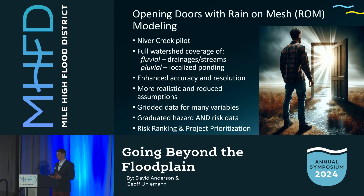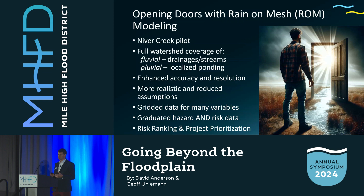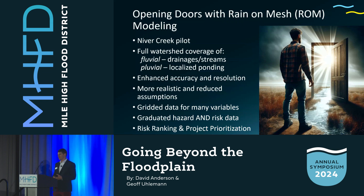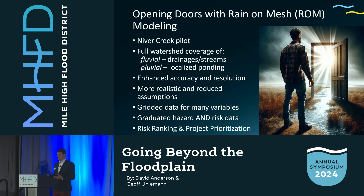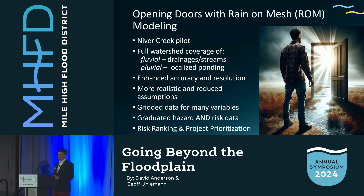Rain-on-Mesh Modeling gives us a full picture of the watershed, whereas our typical 1D riverine modeling approach really just shows us the flooding extents along the main river itself. It gives us the picture of the pluvial aspect — that localized ponding — with enhanced accuracy and resolution throughout the system, a more realistic representation of the overall watershed, and reduces assumptions. It provides gridded output with a large variety of variables to dissect components that inform us of hazard, which translates into risk. Once we define the risk, we can come up with solutions to reduce it and match that with project cost to help with prioritization in a risk-per-dollar-reduction fashion.